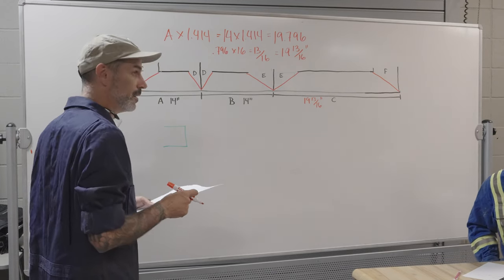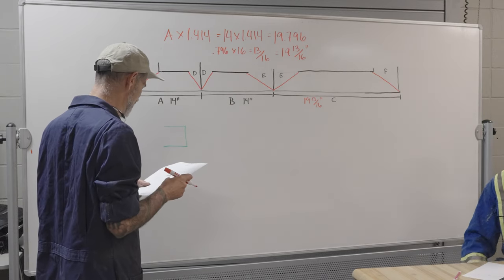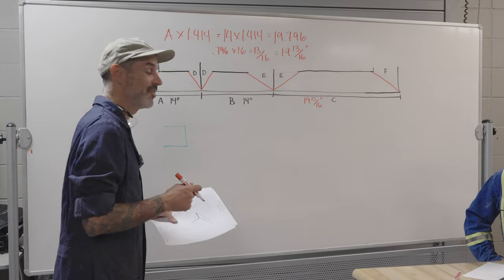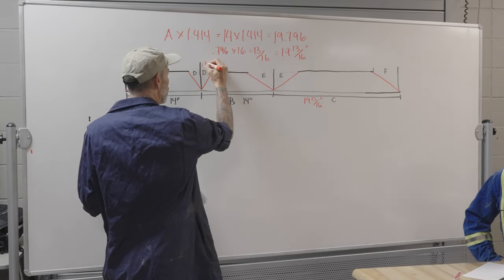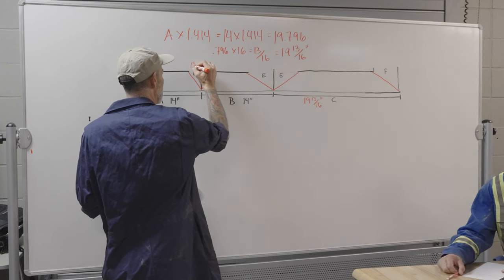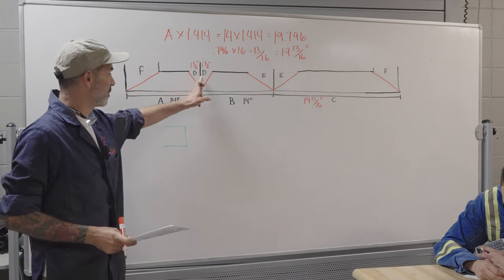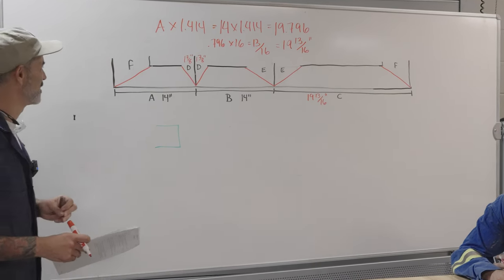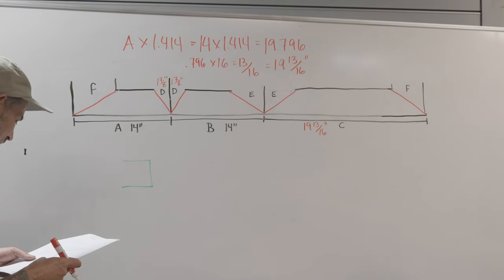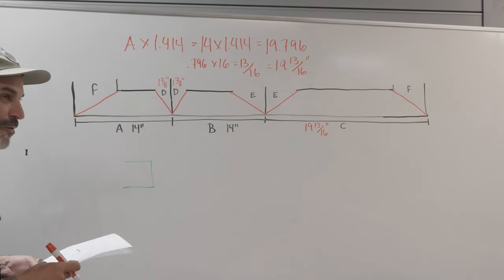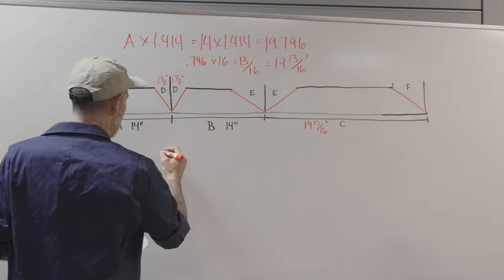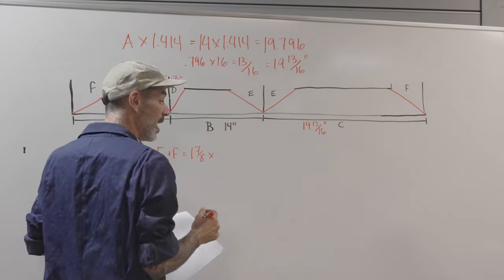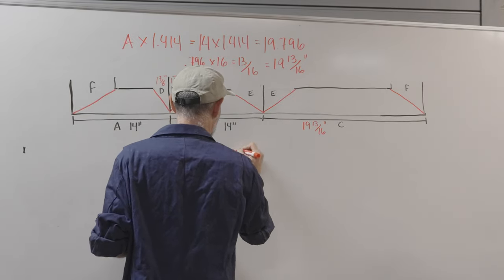Our next measurement is D, which is one and seven eighths. That means each side is one and seven eighths of an inch from center to end. Next we have our E and F measurements. E and F equal one and seven eighths times 2.414.